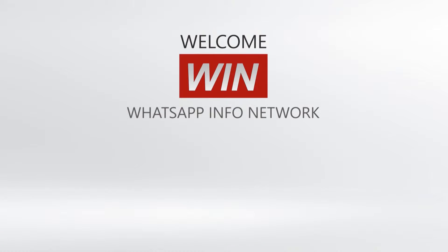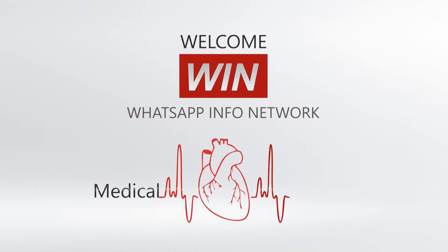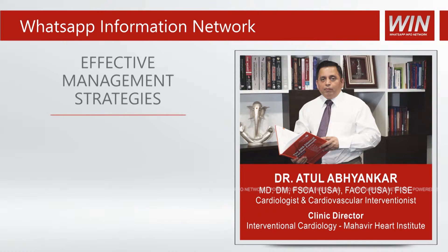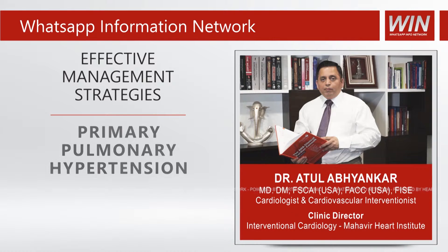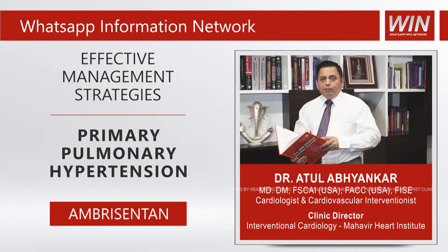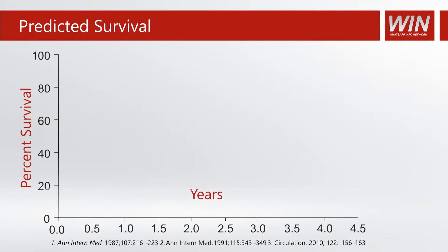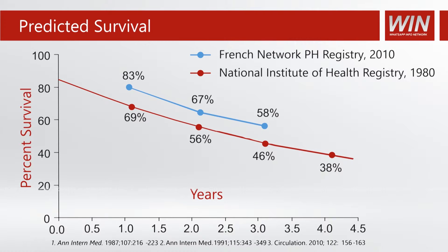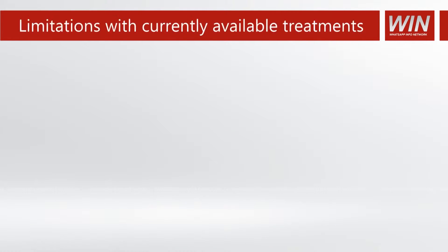Welcome to this episode of the WhatsApp Information Network Medical Education. In this episode we will discuss one of the effective strategies in the management of primary pulmonary hypertension. Primary pulmonary hypertension is a very difficult condition to treat and has a very poor prognosis. Two registries — the French registry and the NIH registry — show a three-year survival of 58% and a four-year survival of 38%.